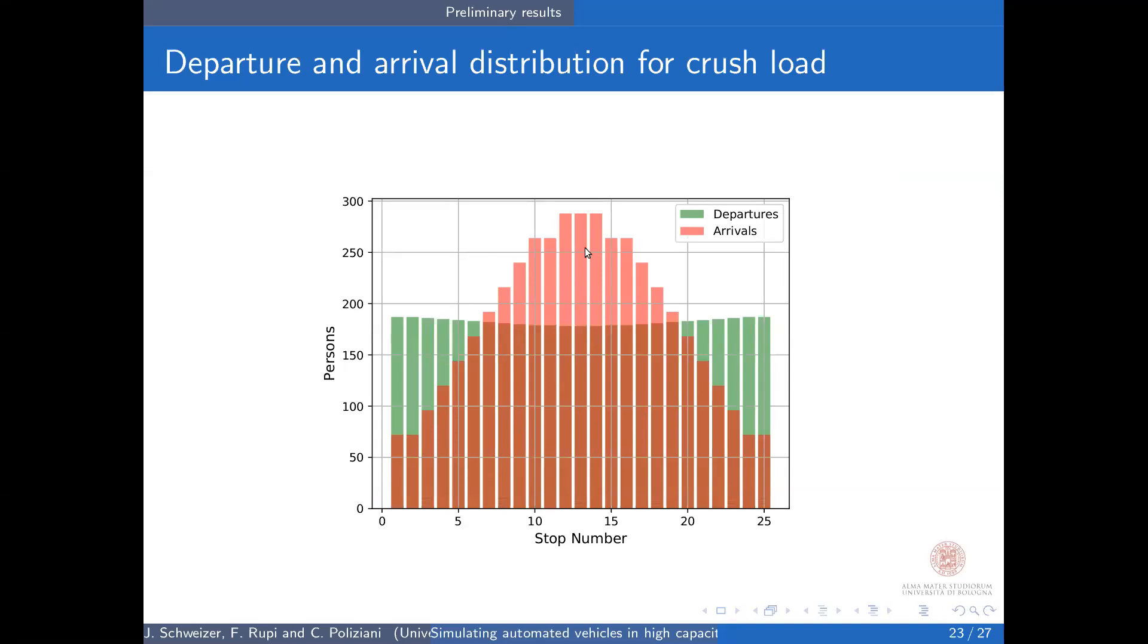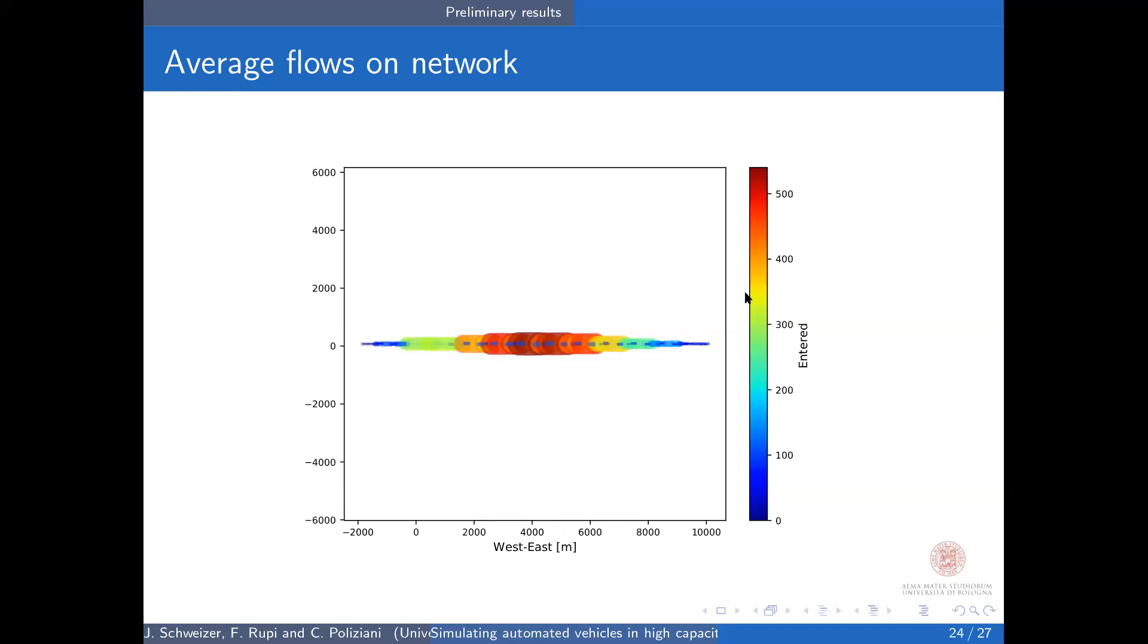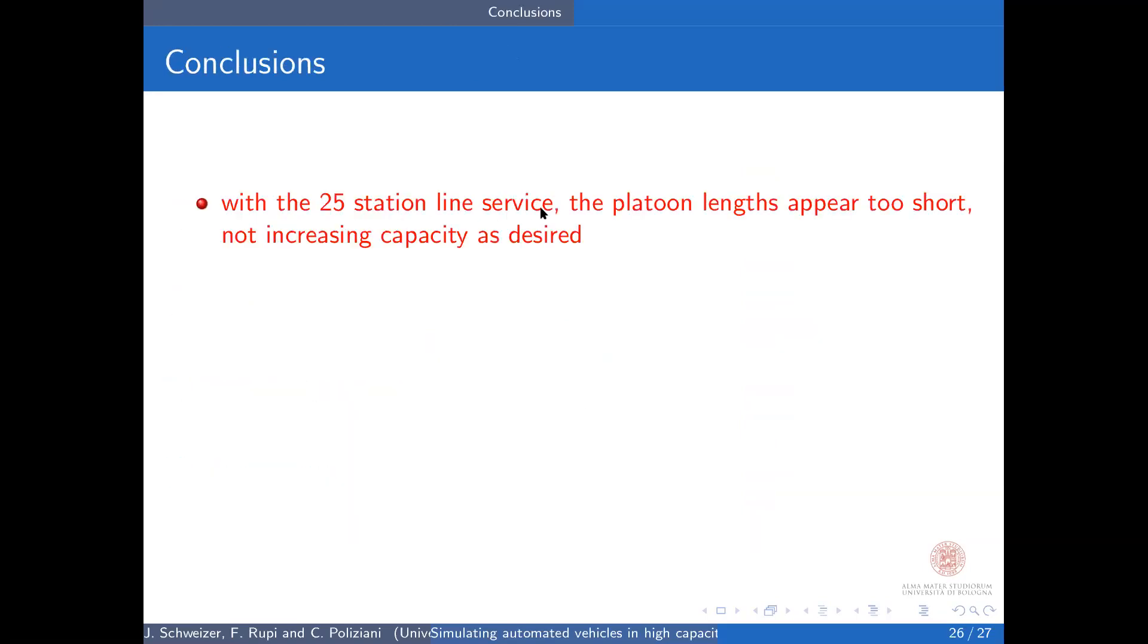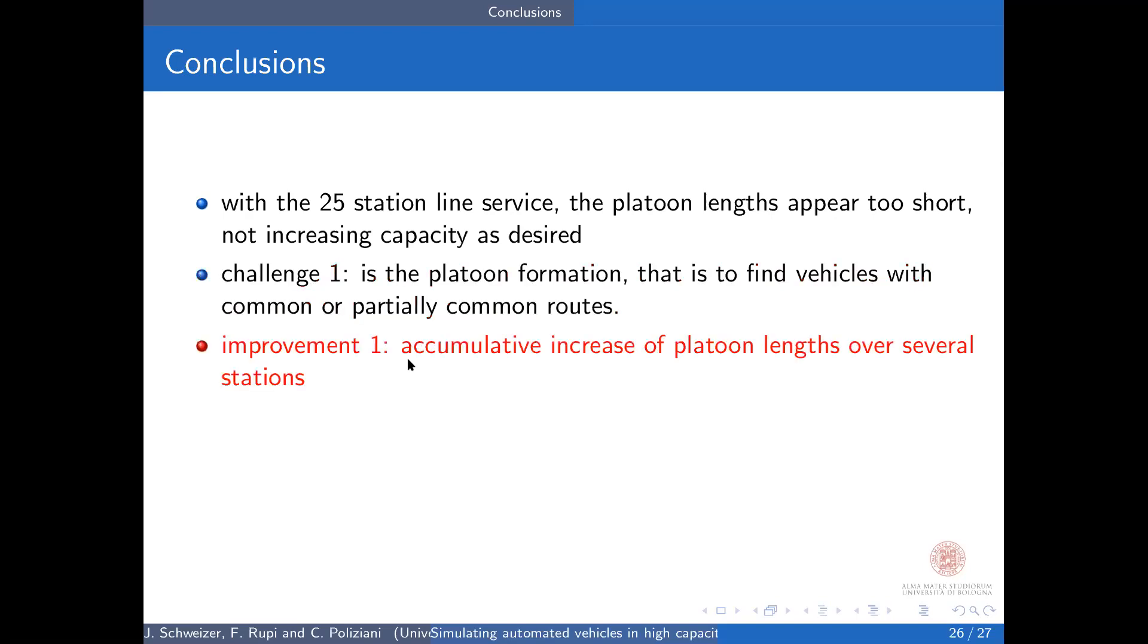This is the demand for this test track—the demand concentrates in the center. The results show flows around 500 vehicles, which is not great. This is mainly because with a 25 station line service, the platoon lengths appear in general too short, so the capacity didn't increase so much. The challenge is the platoon formation, finding vehicles with common routes. The improvement is to implement accumulative increase of platoons over several stations.